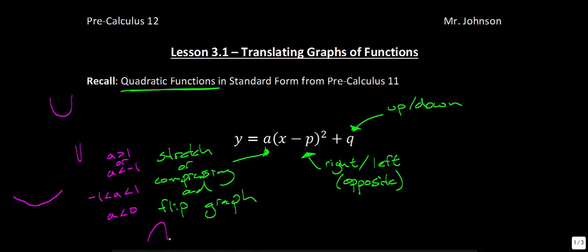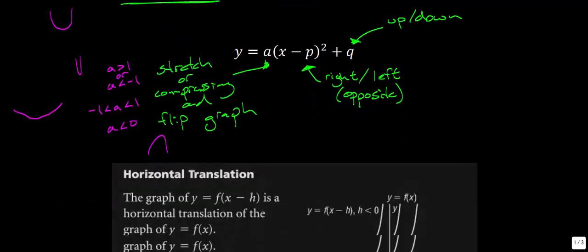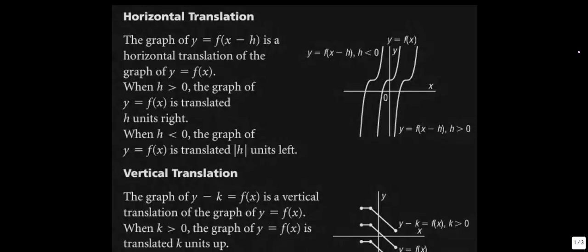So what I want you to remember is what these a, p, and q values do. Because although we might not call them a, p, and q moving forward, there are definitely similarities you'll be able to apply. In general, the graph of y equals f of x minus h is a horizontal translation of the graph of y equals f of x. So when you have an h value — minus h — that's going to take it in the h direction. So if you saw x minus 2, it's going to take you 2 in the positive direction. If you saw x plus 2, 2 in the negative direction.